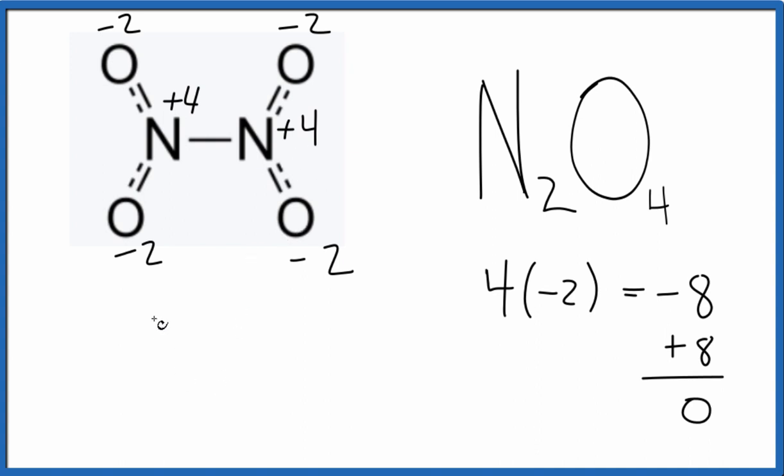You could do this algebraically too. You could say you have four oxygens, each one's minus two, plus X is going to equal zero. In this case, nitrogen would be the X, and we have two nitrogens, so we need to put a two here for our X. And when you solve for X, you'll see that X equals plus four.